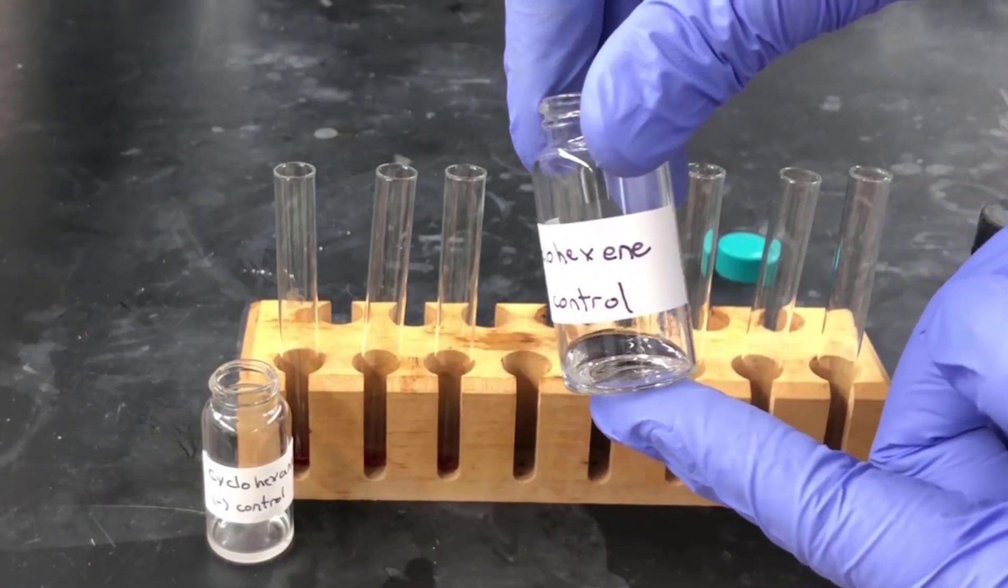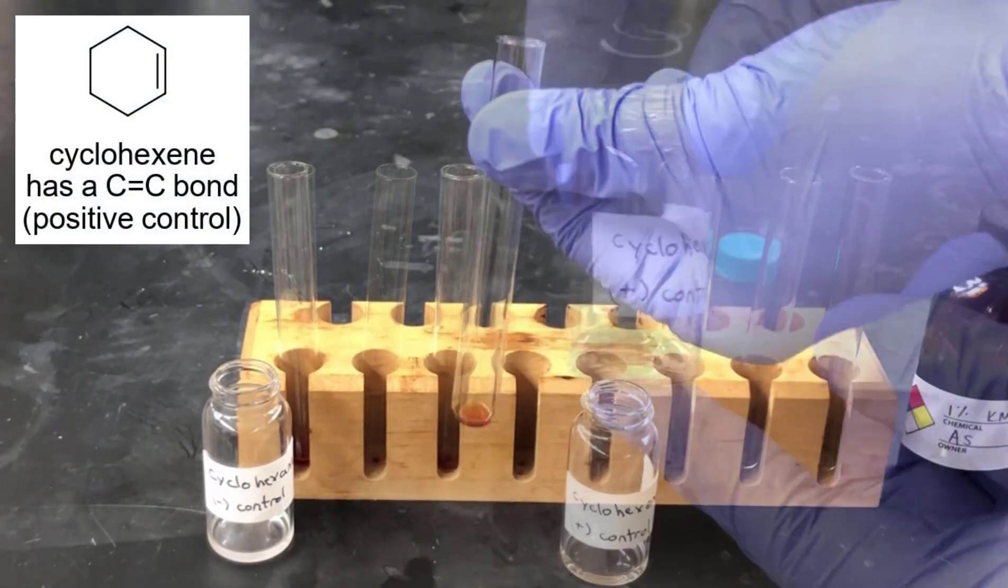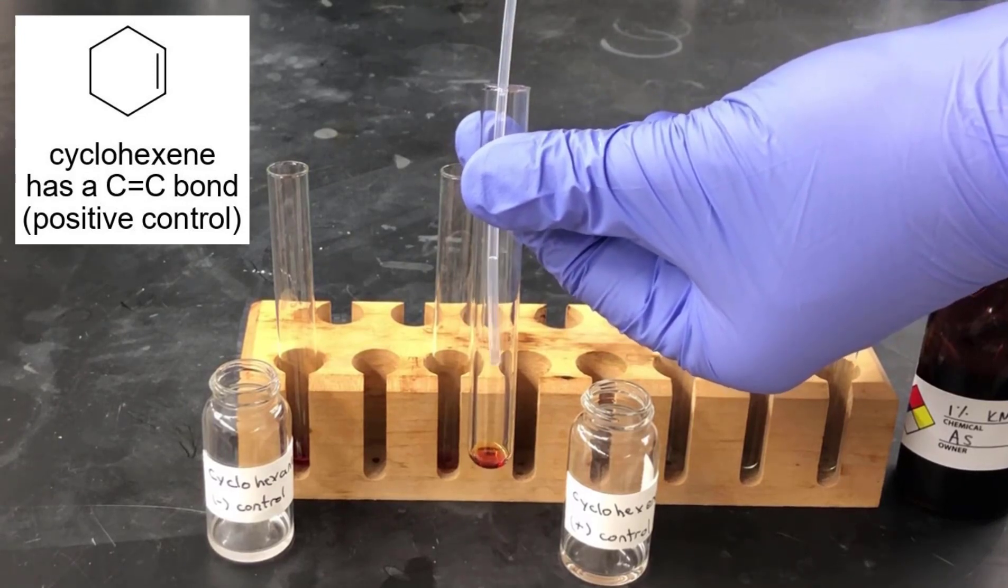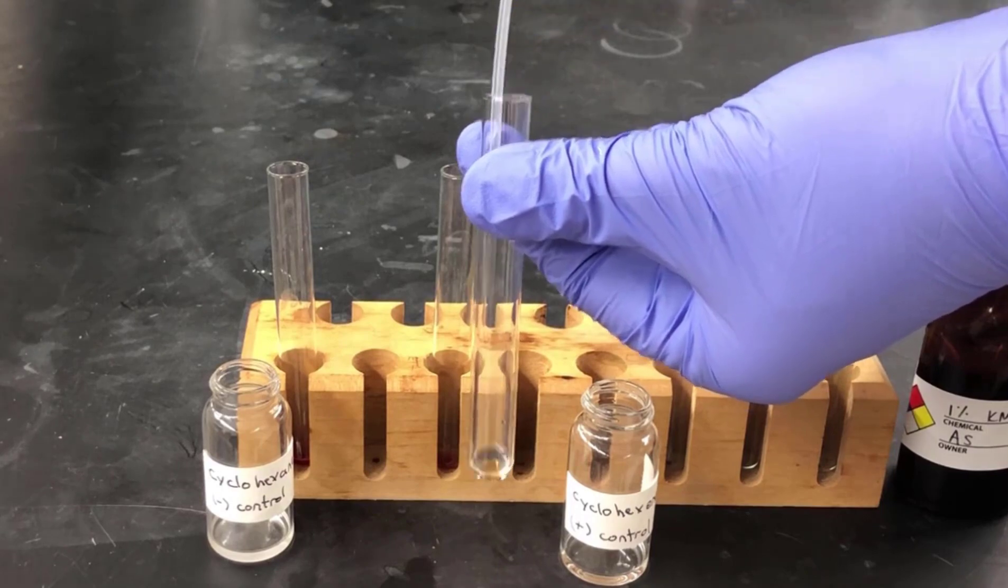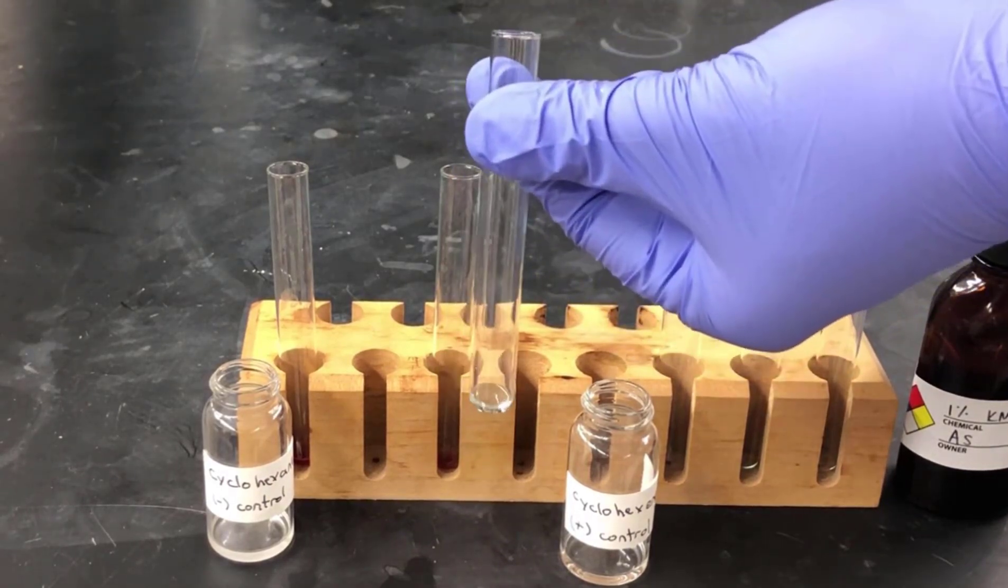Next, we'll do the positive control experiment with cyclohexene. This material contains a CC double bond, and it'll give a positive result. We add a couple drops of cyclohexene and note the result. Here, the color goes away very quickly. This is a positive result.